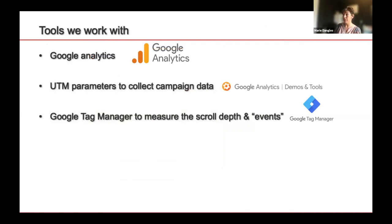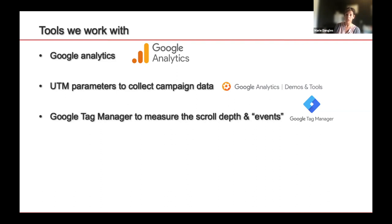Google Tag Manager is quite complicated to use but very powerful. It can help you measure scroll depth and events. For example, if you have a newsletter that can only be opened in the browser, you can put pixels on the homepage, and each time people scroll down, the pixel is activated. You can then trace whether people scrolled 25%, 50%, 75%, or 100% of the newsletter. You can also put events on links — for example, to know how many people downloaded a particular PDF or form on your website.